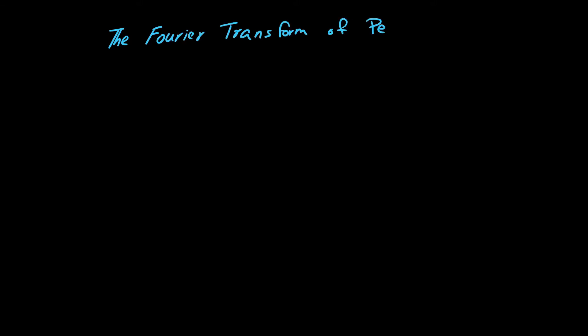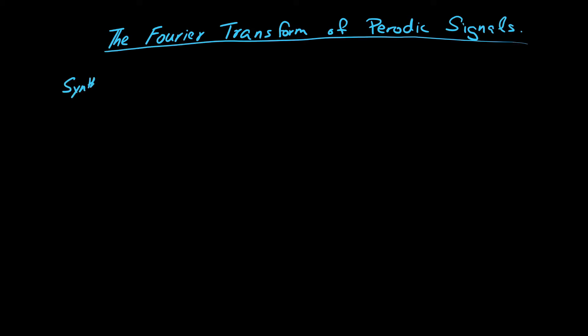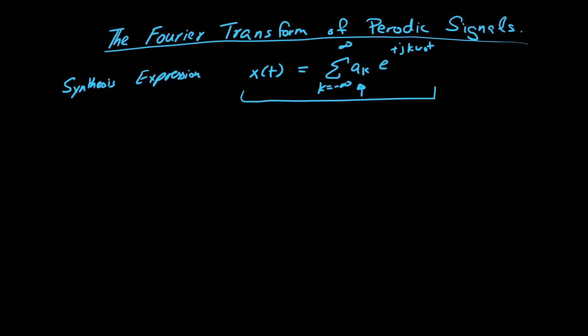This video deals with the Fourier transform of periodic signals. We start with the synthesis expression of the Fourier series, whereby x is a periodic signal that can be broken into a sum of complex exponentials e^(+jkω₀t) with coefficients ak, and the summation is with respect to k from minus infinity to infinity. This is the well-known synthesis expression for any given periodic signal.